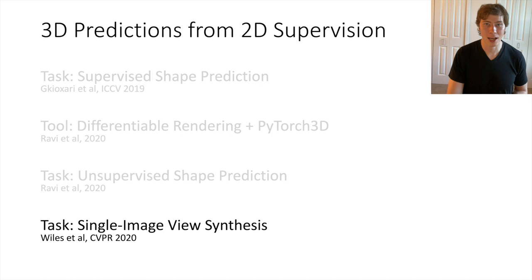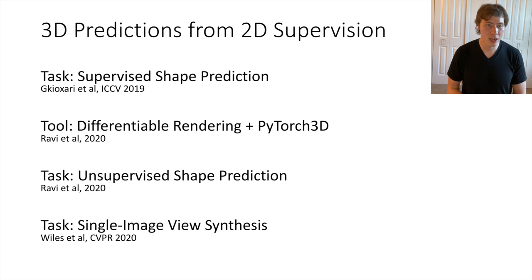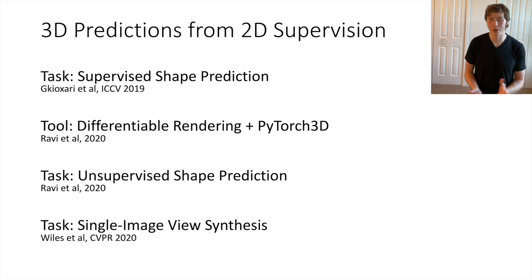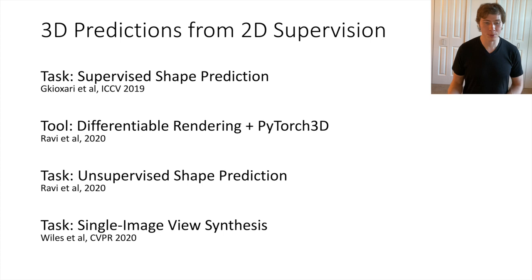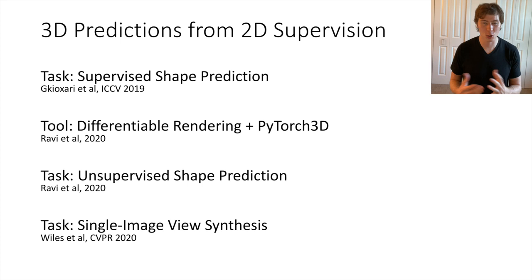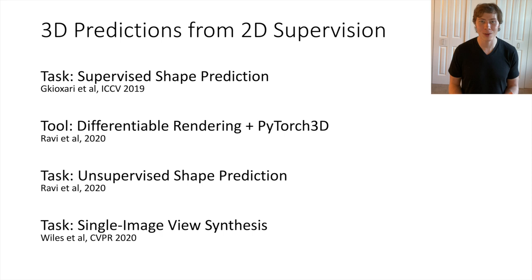In this talk, we covered our overall progress towards making 3D predictions from only 2D supervision. First, supervised 3D shape prediction with MeshRCNN using graph convolution to predict 3D meshes from 2D images. Then, differentiable rendering and PyTorch3D as tools to break away from the constraint of 3D supervision. Finally, two applications — unsupervised shape prediction and single image view synthesis — that make complex 3D predictions supervised only with 2D data through differentiable rendering. Moving forward, I'm excited to continue pushing differentiable rendering and related techniques to recognize 3D structure from 2D images using only 2D supervision. Thanks for your attention.